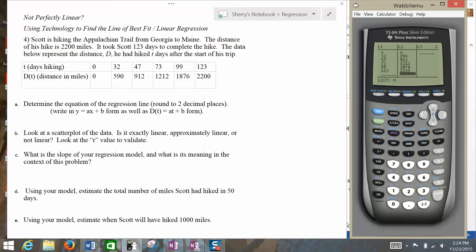Now, the first part of the problem here in Part A asks us to determine the equation of the regression line and round that to two decimal places. To find the equation of the regression line, the first thing that we want to do is to go into the Stat button here.